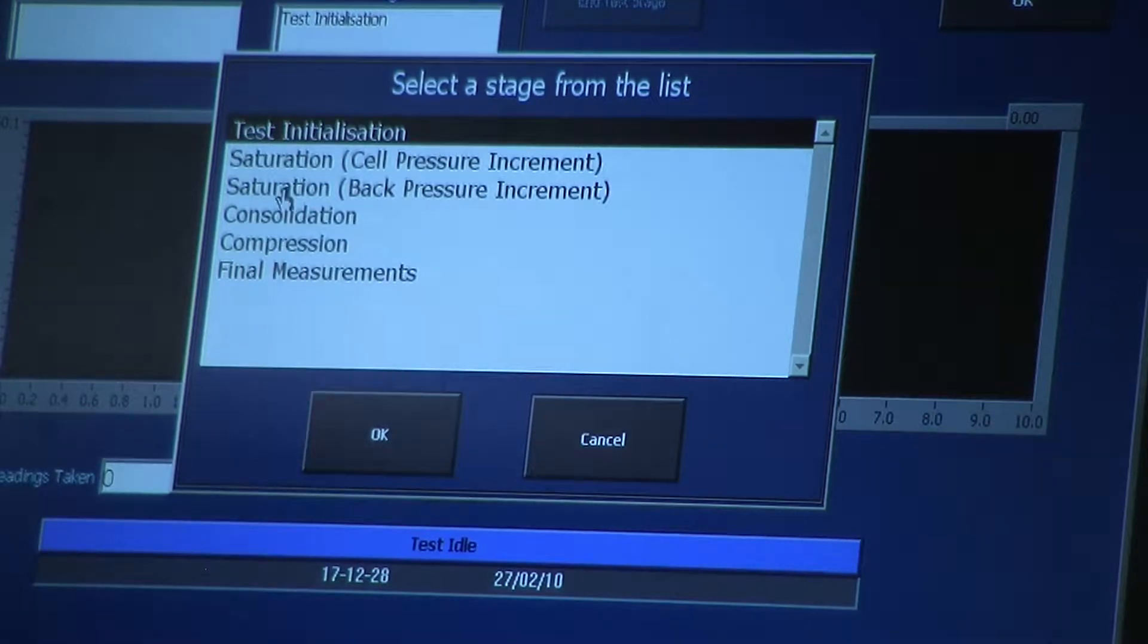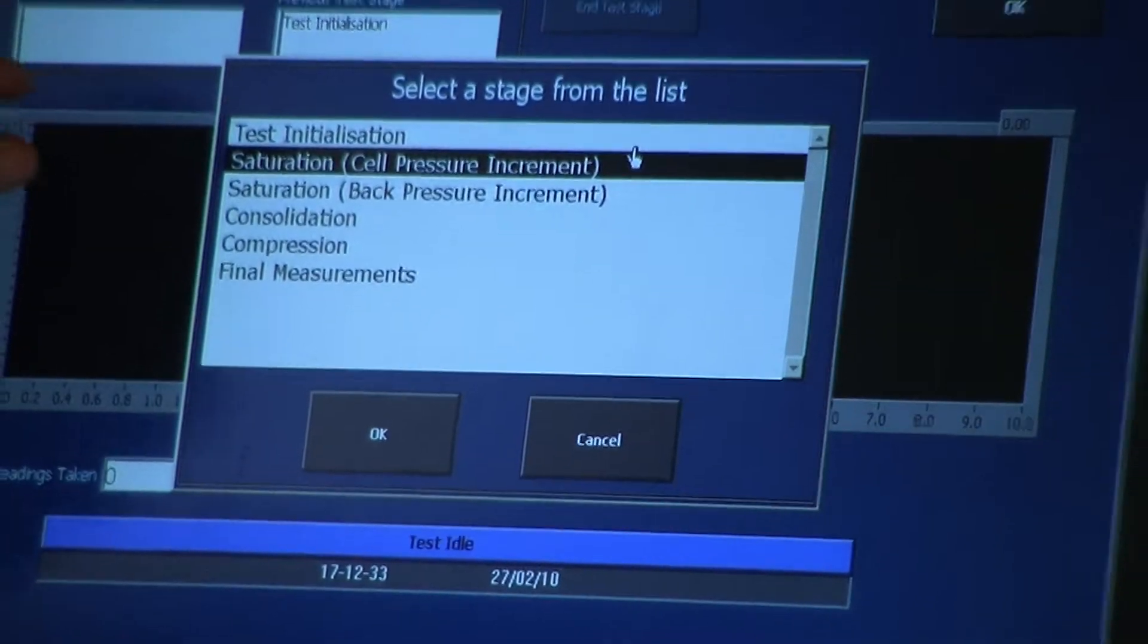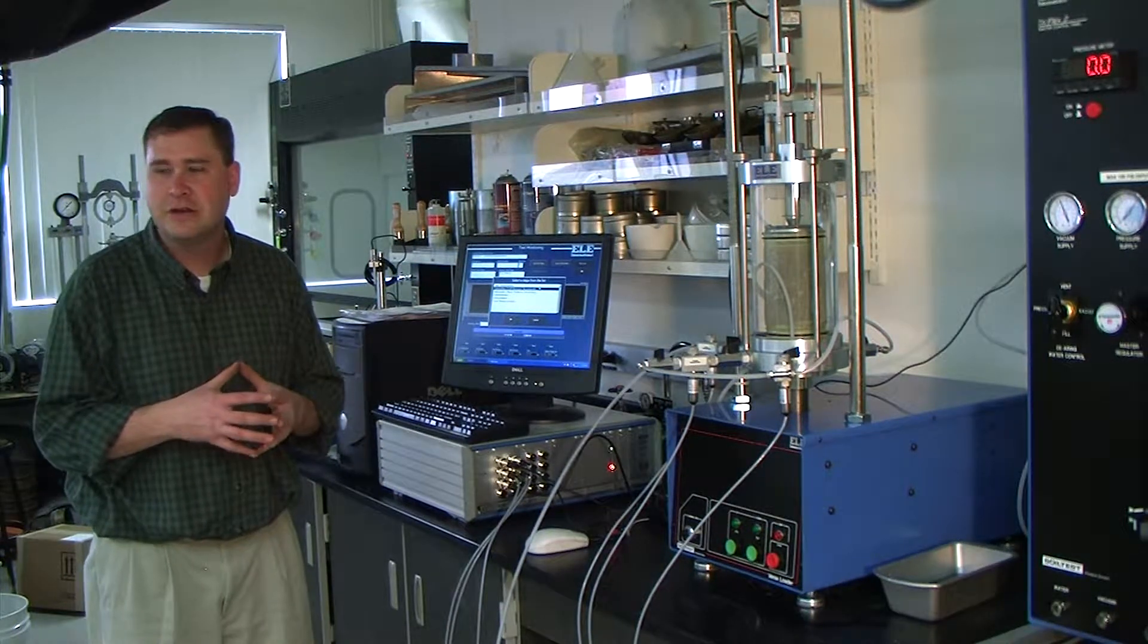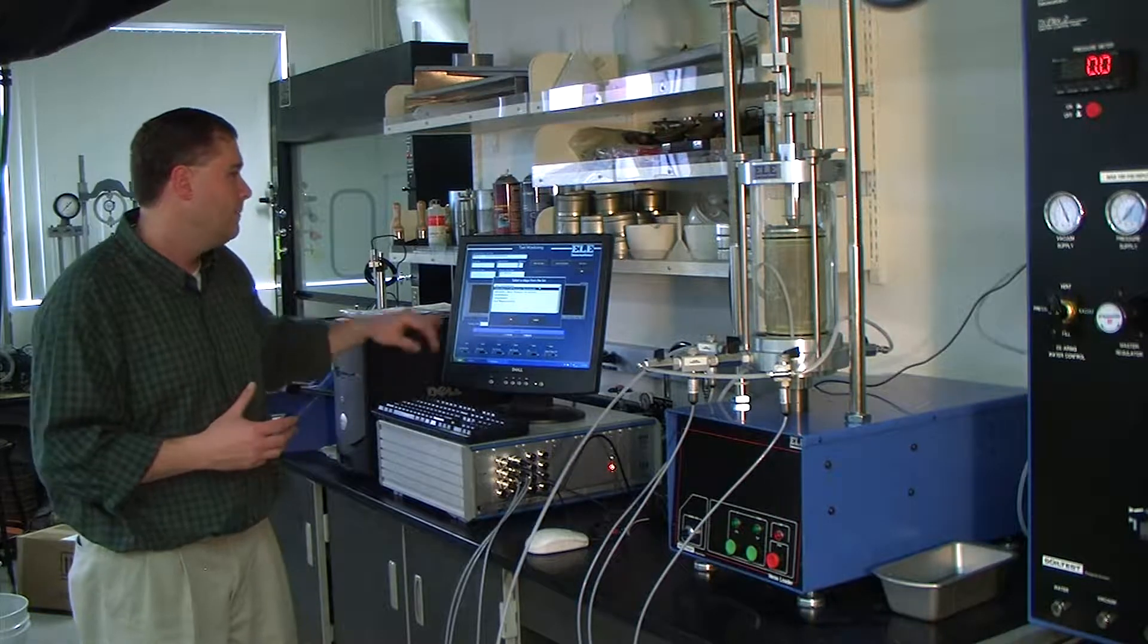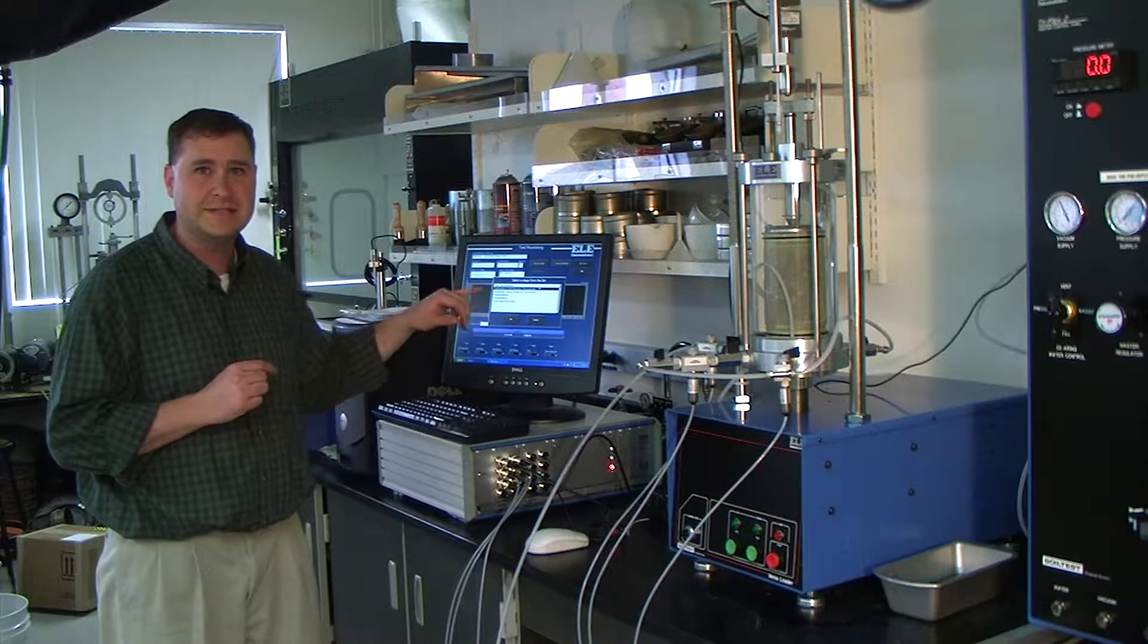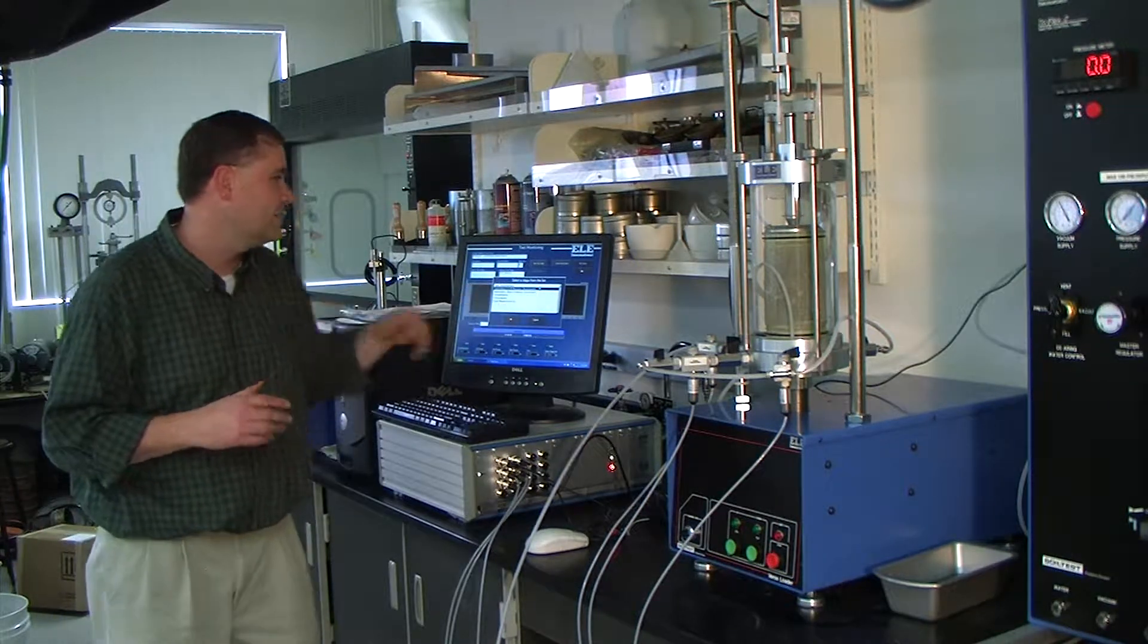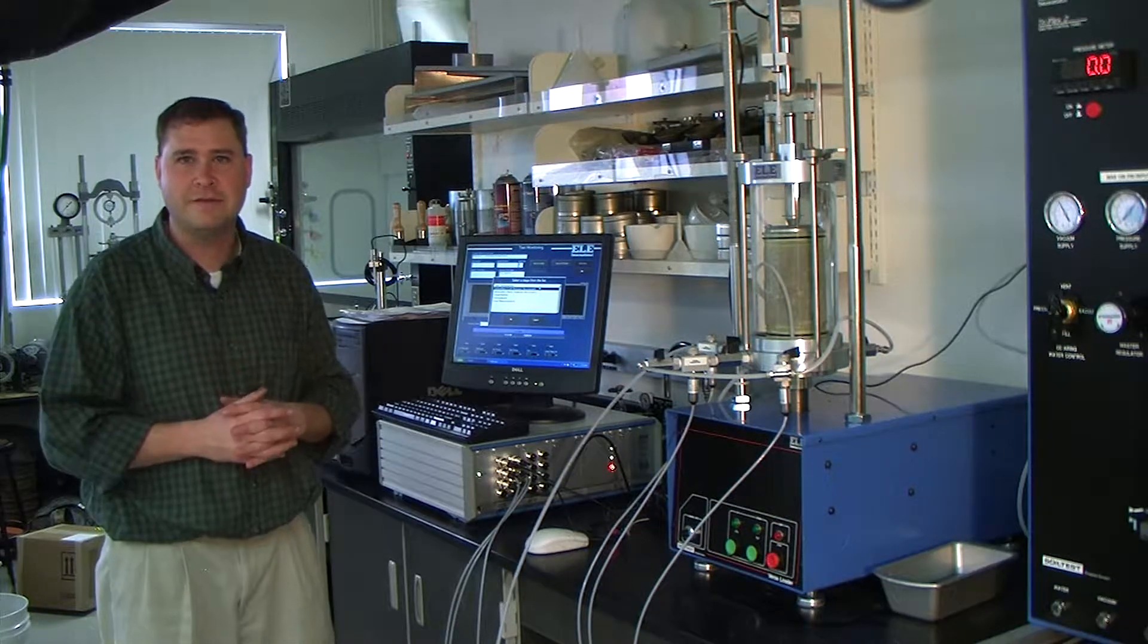The first stage is Saturation Cell Pressure Increment. I really wish they would rename this stage because it's confusing to a lot of people. What it should be called is Saturation B-Value Check or B-Value Determination. All this is, remember when we set up the testing parameters, we determined that our cell pressure increment steps would be 10 PSI. This stage increases 10 PSI, monitors the amount of pore pressure, and calculates the B-Value for us.